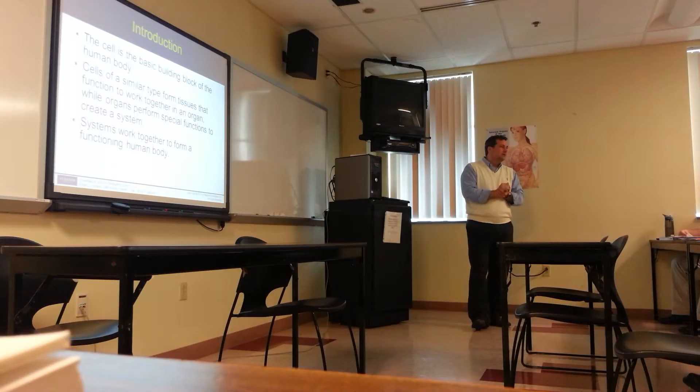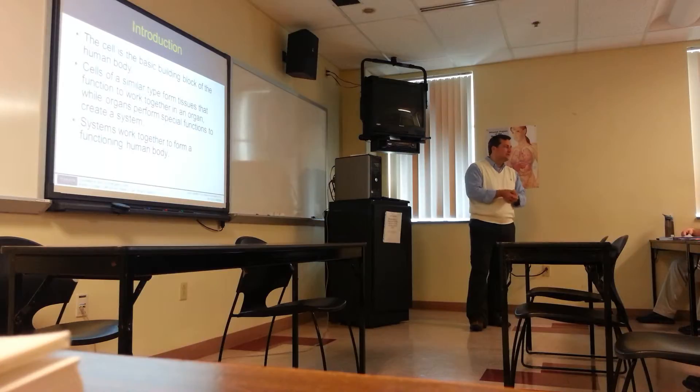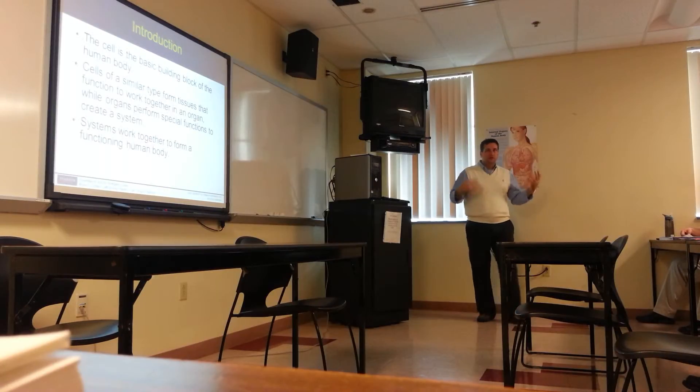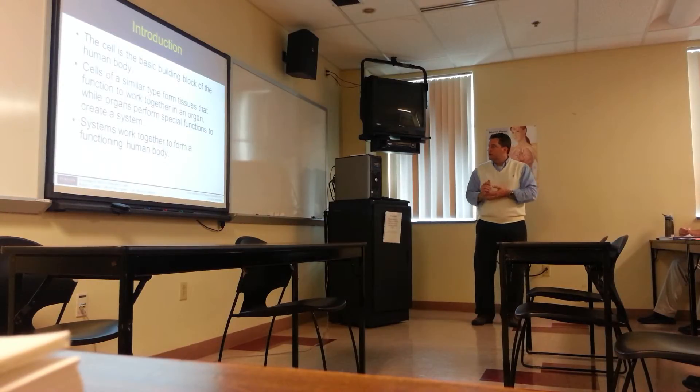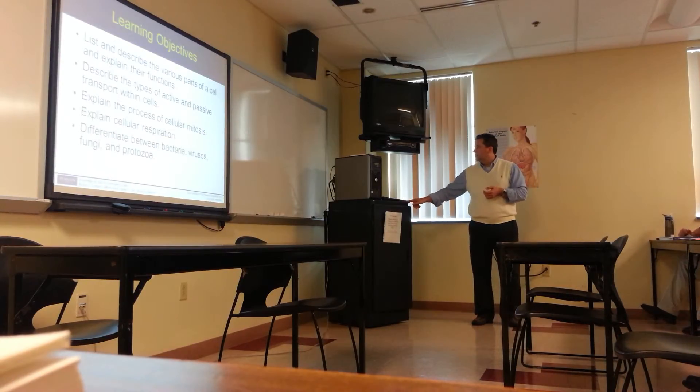A group of the same cells working together is what we call tissue. A group of similar tissues all working for the same end is called an organ. A group of the same organs all working for the same purpose is called an organ system. A bunch of organ systems all working together is, of course, for the benefit of the organism. So it goes in that order, in that hierarchy.